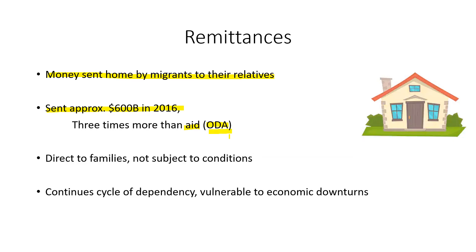ODA — official development assistance — is the money that rich countries send to poor countries as foreign aid. One advantage of remittances is that the money goes directly back to families through places like Western Union, bypassing the government without conditions. However, when migrant workers continue going to rich countries for work, it perpetuates the cycle of dependency — from a Marxist viewpoint, keeping the poor countries dependent on the rich countries.